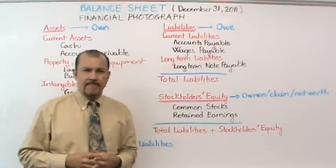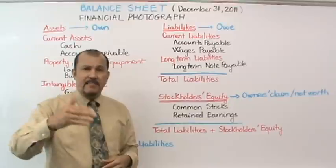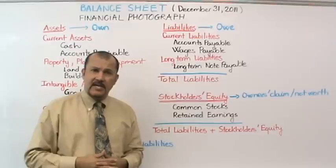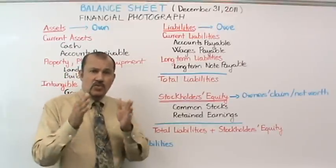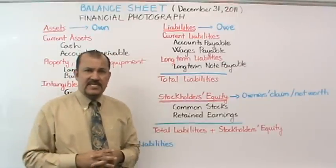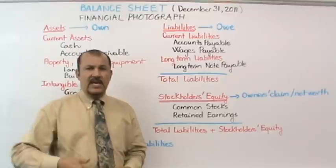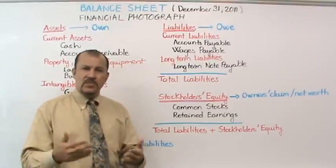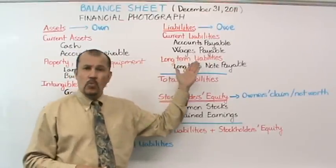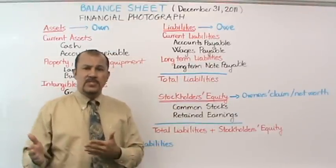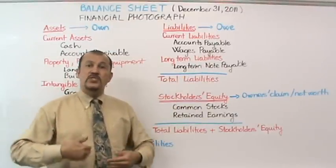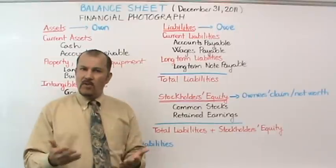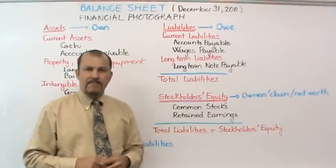Wages payable is another liability account. As an employer, your employees come to work every day, but you probably don't pay them every day. If you pay them once a week on a Friday, then at the end of Monday your employees have done a day's work and you owe them money. By Tuesday you owe them for two days. These amounts are reflected as wages payable. Payables come off your books once you make a payment — whether to Office Depot, Staples, or your employees.